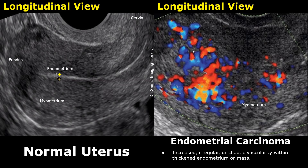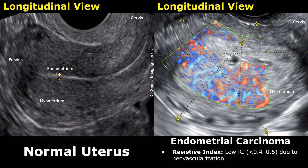On color Doppler, there is increased irregular or chaotic vascularity within the thickened endometrium or mass. This increased chaotic blood flow is another indicator of likely endometrial carcinoma. On spectral Doppler, if we calculate the resistive index of this flow, it will be below 0.4 or 0.5 for increased vascularity related to endometrial carcinoma.